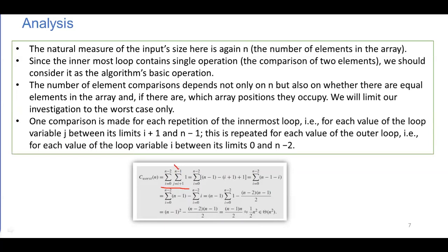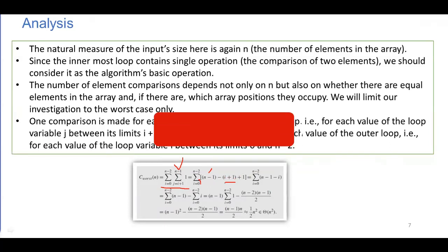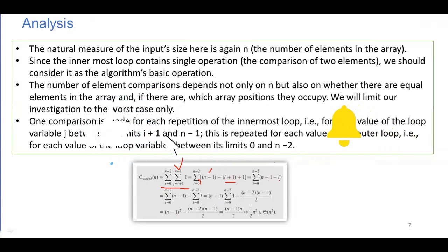We establish the summing expression: sigma from i = 0 to n-2 of sigma from j = i+1 to n-1 of 1. To eliminate the inner summation, we use the formula: upper bound minus lower bound plus 1, which gives (n-1) - (i+1) + 1 = n - 1 - i.